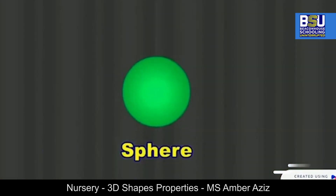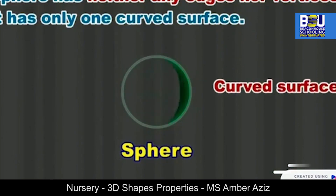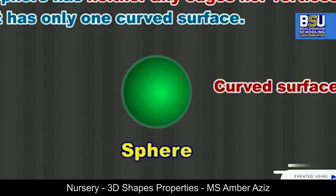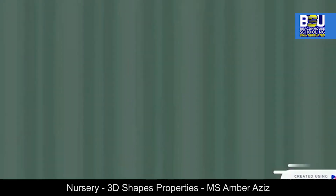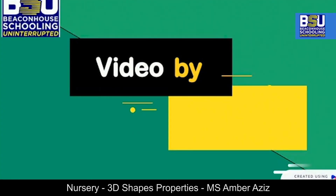Now look at the sphere. It has neither any edge nor any vertex. It has one curved surface. Hope you enjoyed the lesson. Thank you!